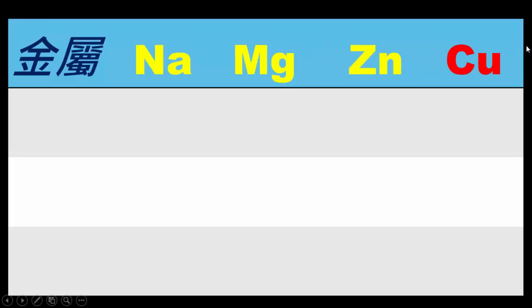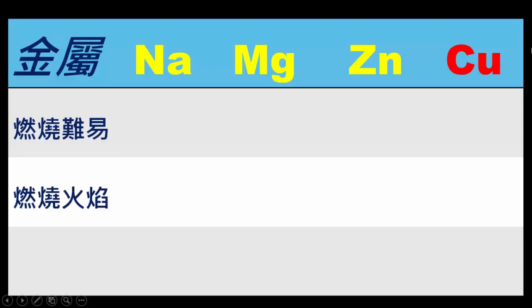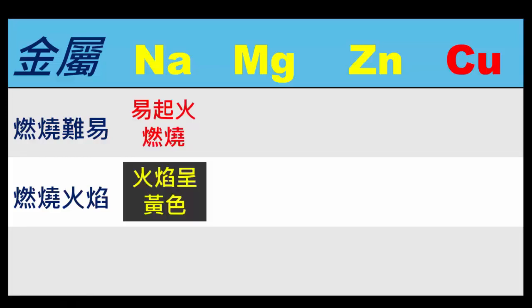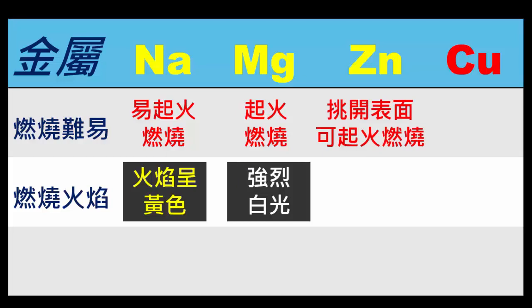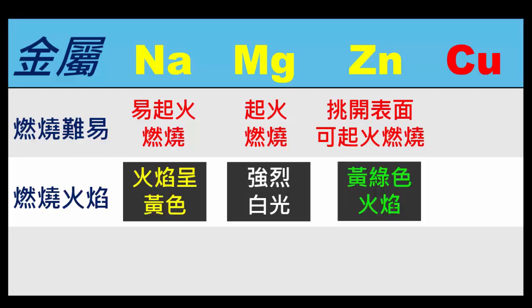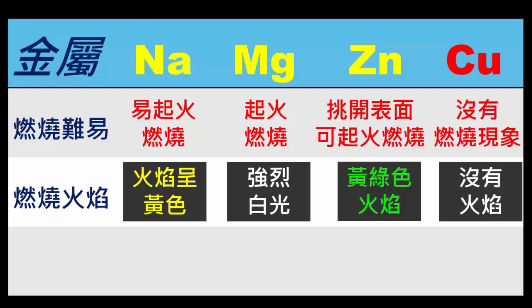让我们来比较钠、镁、锌、铜这四种金属燃烧的情况，也就是我们常常会利用燃烧来表现物质对氧的活性大小，也能用燃烧来观察物质氧化的现象。首先钠非常容易起火燃烧，它的火焰是黄色的。镁带可以起火燃烧，不过没有像钠反应这么快，加热一阵子会产生白色的强光。而锌加热一阵子之后可以起火燃烧，离开火焰表面的物质可能要挑开内部才会继续有燃烧的现象。锌粉的燃烧火焰是黄绿色的。铜没有燃烧现象，它没有火焰。